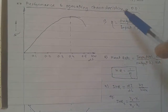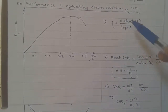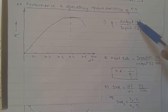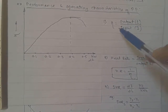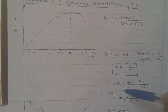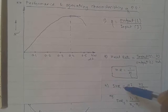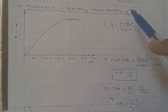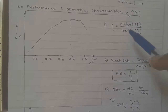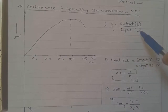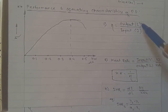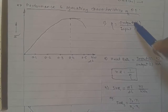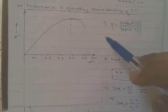So what are the performance and operating parameters of the power plant? These parameters are: input (denoted by I), output (denoted by L, also called load), efficiency, heat rate, and incremental heat rate. These are the key performance parameters of a power plant.